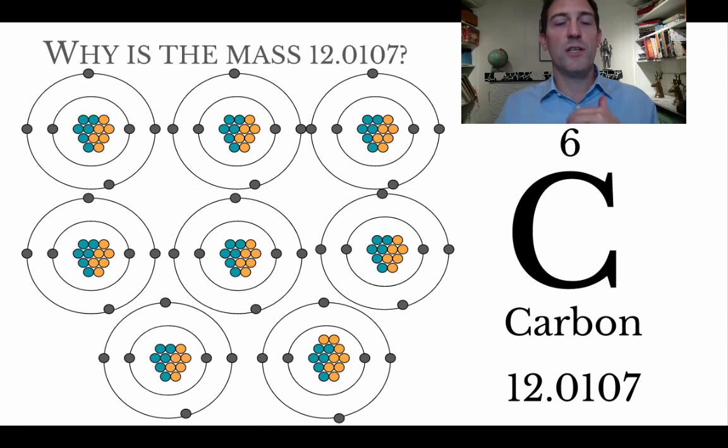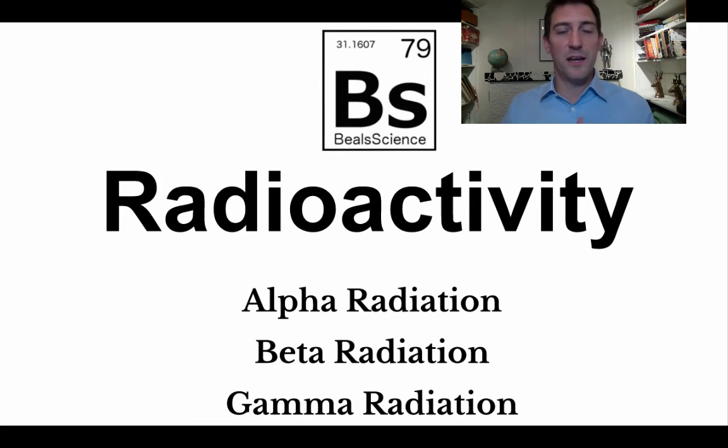When you look at the periodic table, just about every single element on the periodic table does not have a nice whole number. That's because just about every element has isotopes. Some of them haven't been studied clearly enough to know what those isotopes are. So that's the basics, going back to the basics of the structure of an atom.